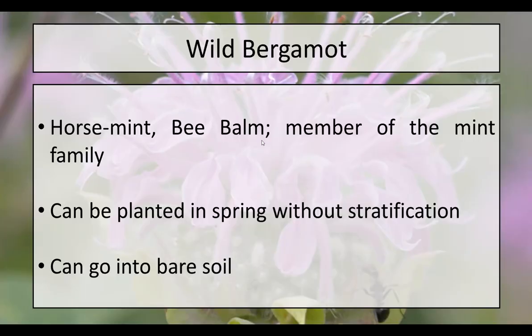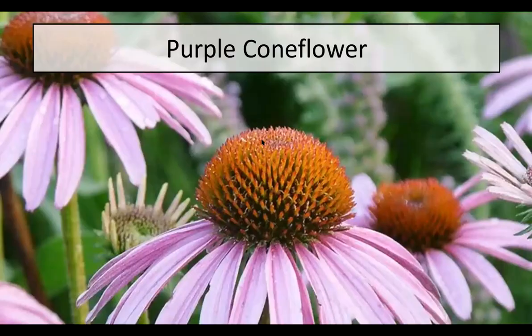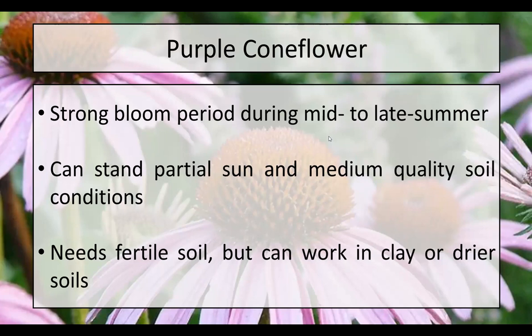Another one is purple coneflower, which is very native to Indiana. We won't see this one for a little bit yet — it has a really good bloom period from mid to late summer, beginning in June and lasting almost all the way to August. This is a partial sun plant that does require some fertile soil. You can make it work in clay or drier soils but you'll need to baby those a little bit. If you've got a clay area, you might want to put something else there, like wild bergamot, that might survive a little bit better.